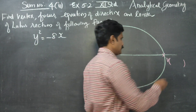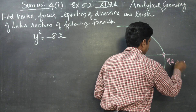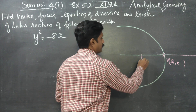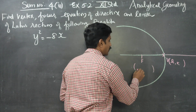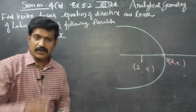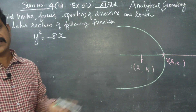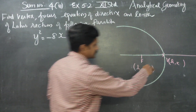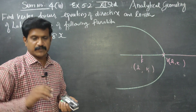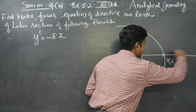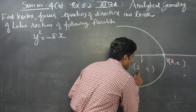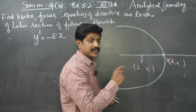The vertex is given by (H, K). The focus is also expressed as (H, K) as a starting point. But since this is an X-axis parabola, you have to add or subtract a value with H only, not with K.